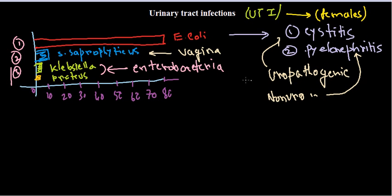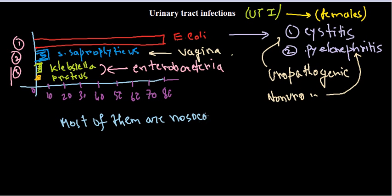Cystitis is pretty common in young women. Staphylococcus saprophyticus is a gram-positive coccus and a frequent cause of cystitis in women, likely related to its occurrence as part of the normal vaginal flora. Most urinary tract infections are nosocomial — meaning hospital-acquired infections — especially those caused by Staphylococcus saprophyticus.